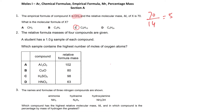We have a 1-gram sample of each compound and need to find which contains the highest number of moles of oxygen atoms. The approach is: find moles of the compound, then multiply by the number of oxygen atoms in that compound's formula.